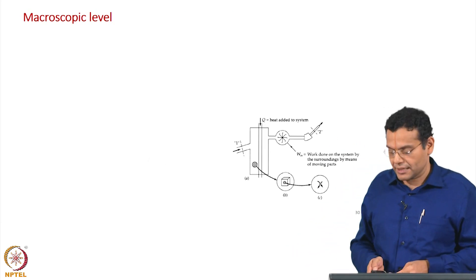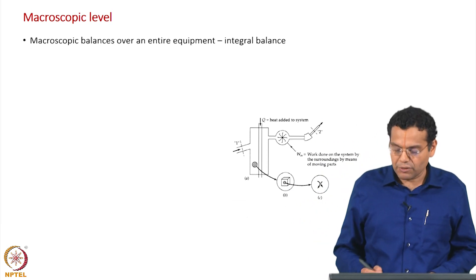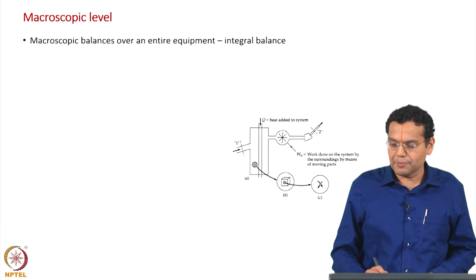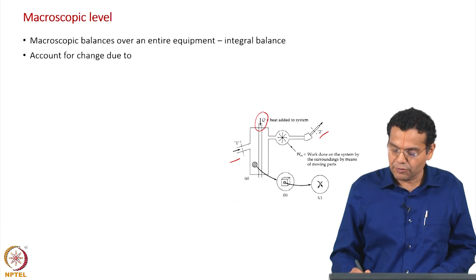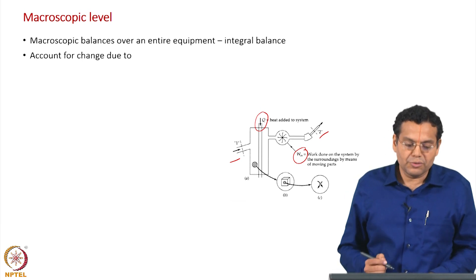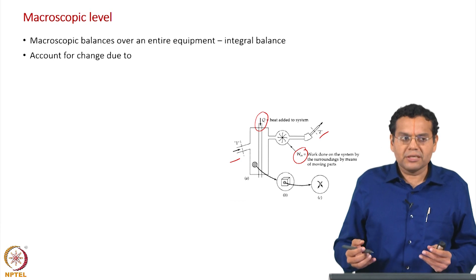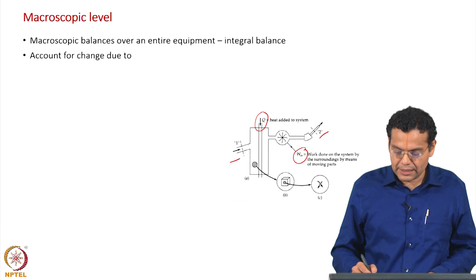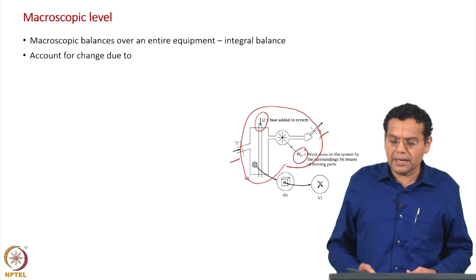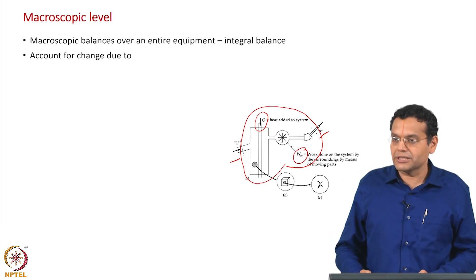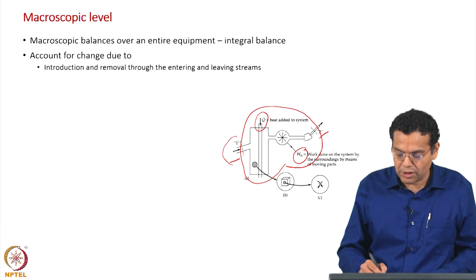At the macroscopic level of transport phenomena, we write macroscopic balances over an entire equipment. What is shown here is equipment with some inflow, some outflow, heat added, and work added. When you analyze this process at the macroscopic level, you write a balance equation — a conservation equation — over the entire equipment. These are called integral balance equations.